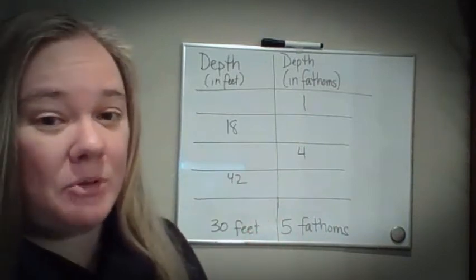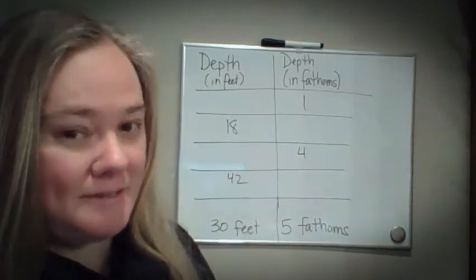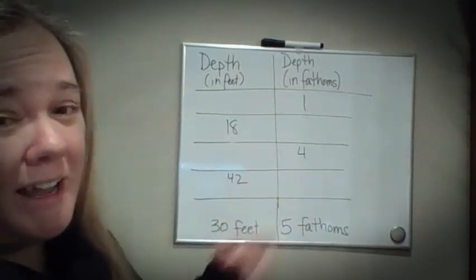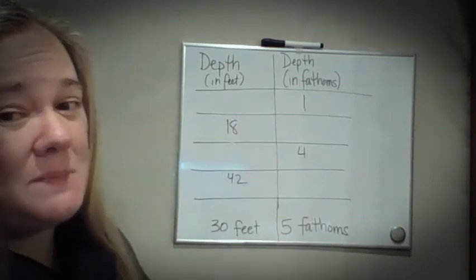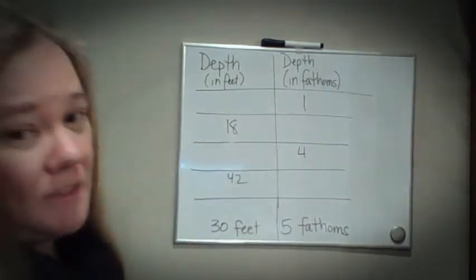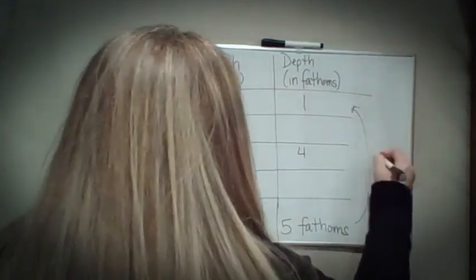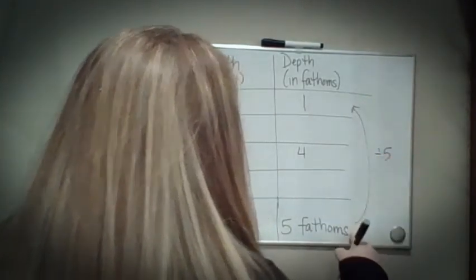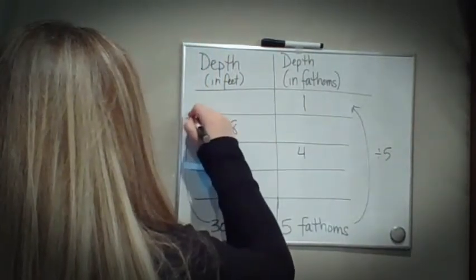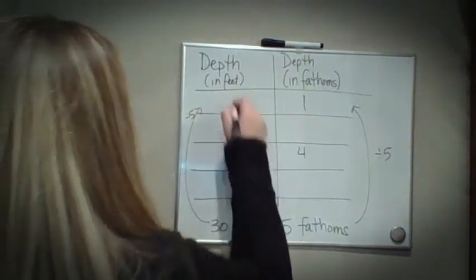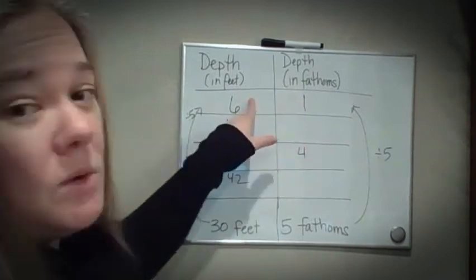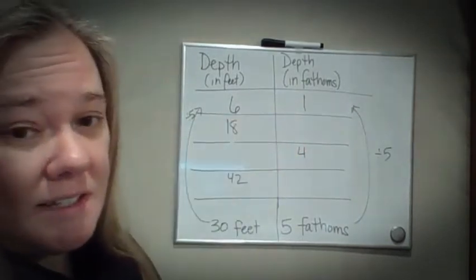If I want to find for any number, we're going to go back to the unit. So I'm going to go from five fathoms down to one fathom using a division of five. When I divide by five, five divided by five is one, and I'm also going to divide 30 by five here. 30 divided by five is six. So for every fathom, it's equivalent to six feet deep.